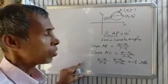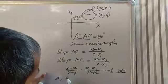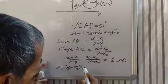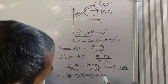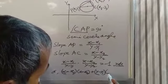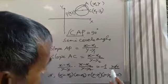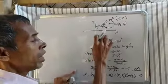Now simplification: (x minus x1) into (x minus x2) plus (y minus y1) into (y minus y2) equal to 0. This is the equation of circle. Again, if two ends of diameter given, we can find out the equation of circle.